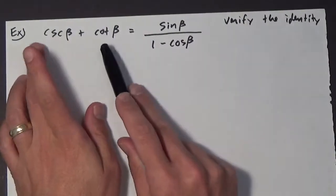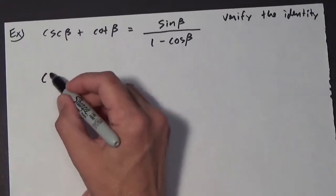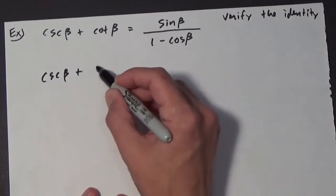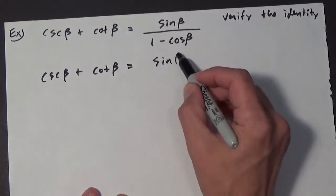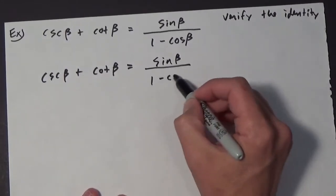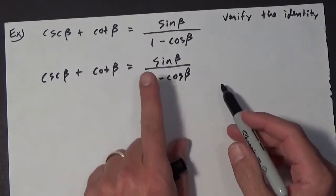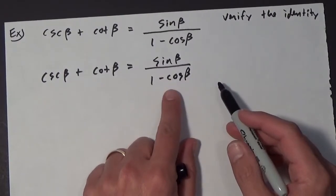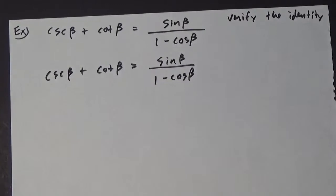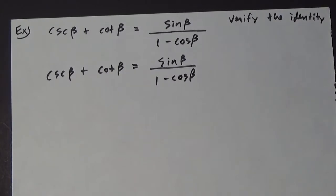Since we normally choose the left, let's go ahead and choose the right one on this one. So we have the cosecant of beta plus the cotangent of beta equals the sine of beta over 1 minus the cosine of beta. I chose this side to demonstrate a technique that sometimes you've got to use. It's not too obvious, but it does come up once in a while.